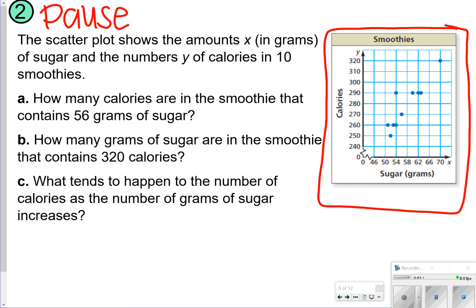All right, so for letter A, it says how many calories are in the smoothie that contains 56 grams? I just go over here between 54 and 58, and I get right at 270 calories. For letter B, how many grams of sugar in the smoothie for 320 calories? I go up to 320, look across, and it intersects with 70 grams of sugar.